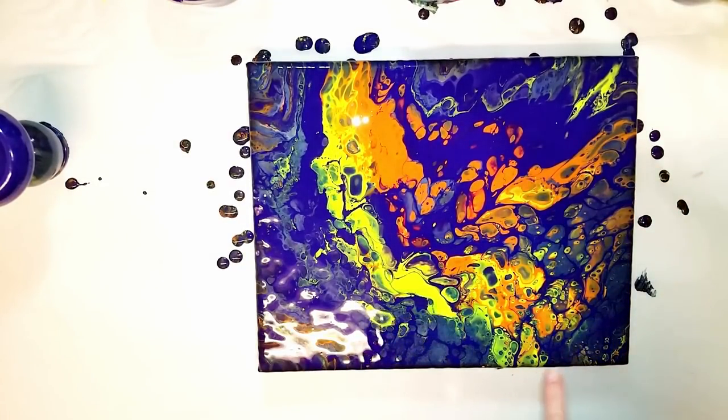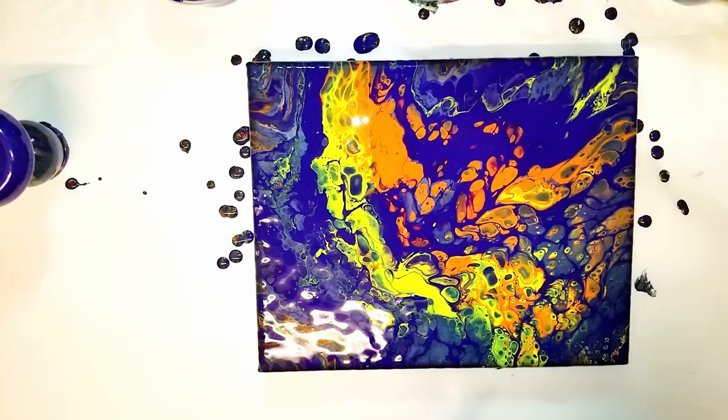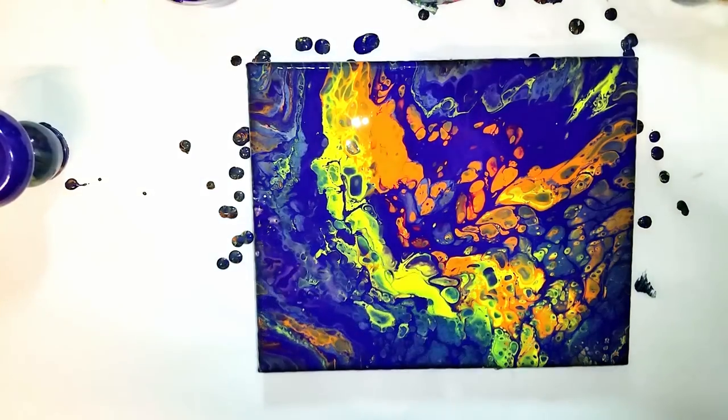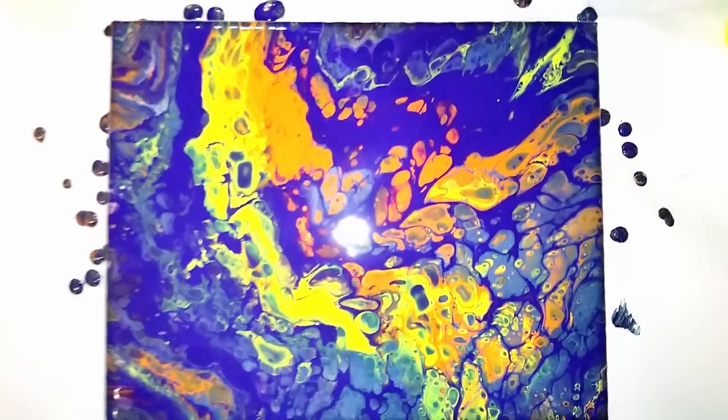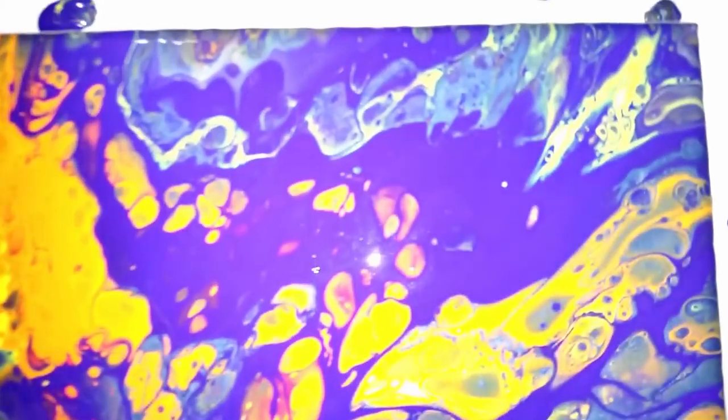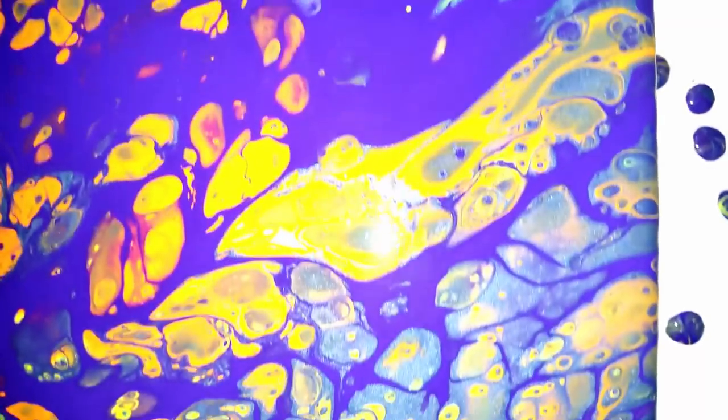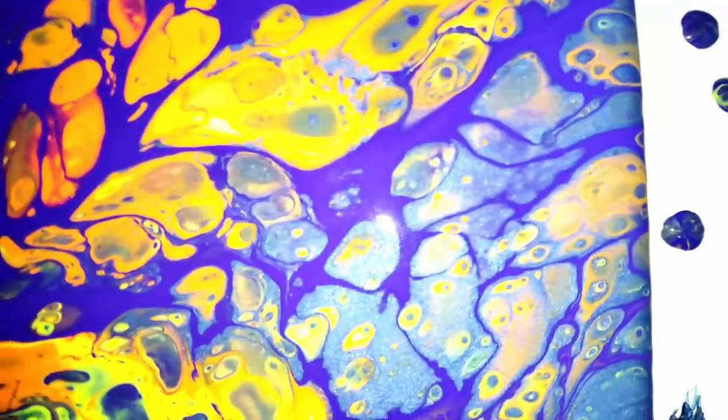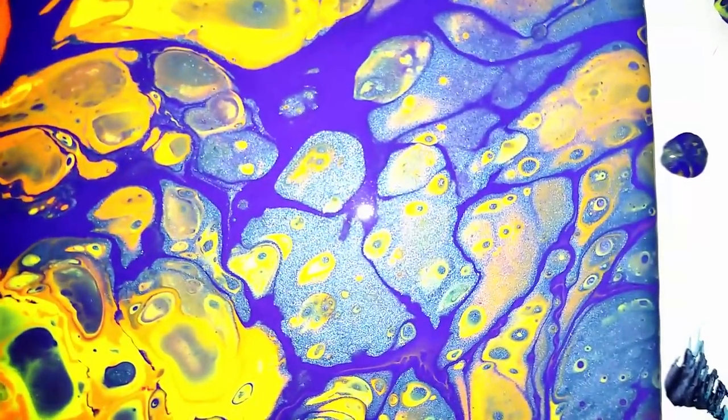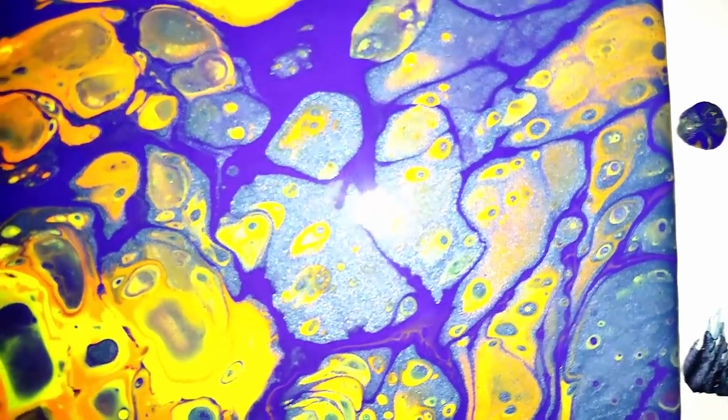I'll do some close-ups because I'm getting some really cool cells. I made some of them wonky when I tilted the last time. But some really pretty cells popping up here. I like the purple and the yellow and the orange. Not digging that steel gray. You'll have to let me know what you think. Some cute little cells.